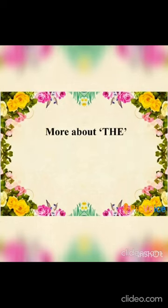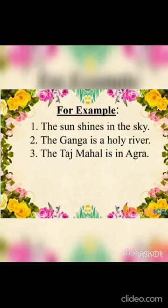Some more about the article 'the' — 'the' is also used before names of things that are only one of their kind. For example: the sun shines in the sky, the Ganga is a holy river, the Taj Mahal is in Agra.